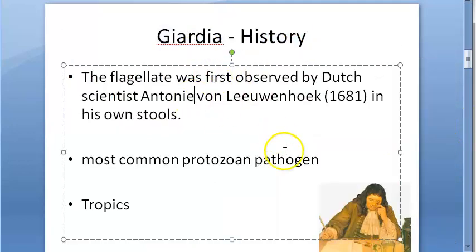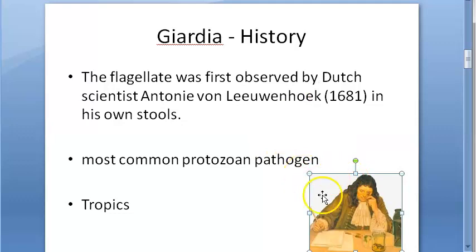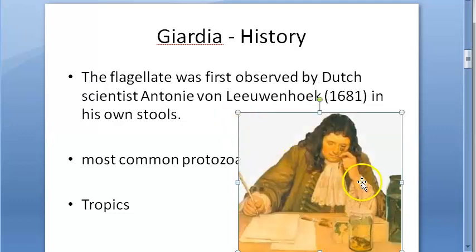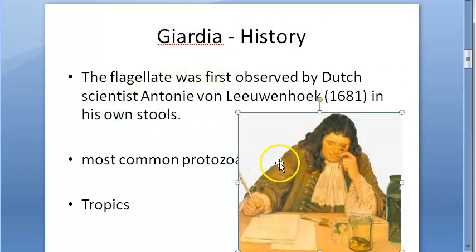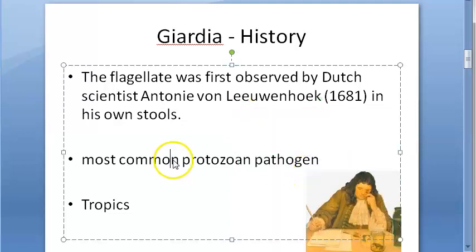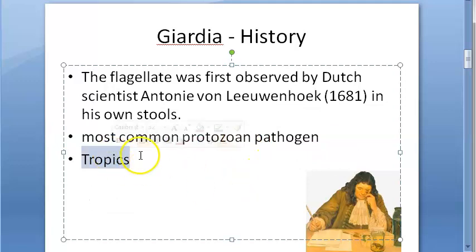Giardia lamblia history: it was first observed by Antony van Leeuwenhoek, a Dutch scientist. He saw this Giardia in his own stools - meaning he had Giardia, which is interesting. It is actually the most common protozoan pathogen and is found more in tropical and subtropical areas.